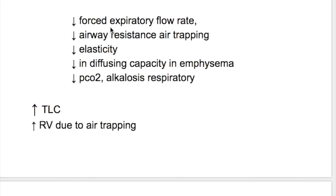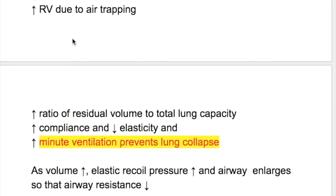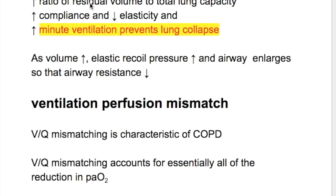Parameters that are increased in emphysema: increased total lung capacity due to air trapping, increased residual volume due to air trapping, increased ratio of residual volume to total lung capacity, increased compliance with decreased elasticity, and increased minute ventilation, which prevents lung collapse. As volume increases, elastic recoil pressure increases and airway enlarges so that airway resistance decreases.